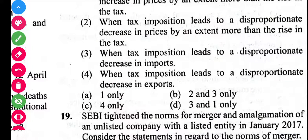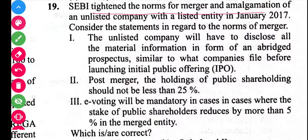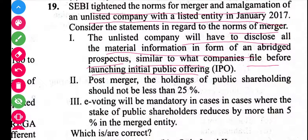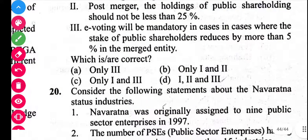Next question is related to SEBI. SEBI tightened norms for merger and amalgamation of unlisted companies with listed entities in January 2020. The unlisted company must disclose all material information in the form of an abridged prospectus similar to what a company files before launching an IPO. Post-merger, public shareholding should not be less than 20%. E-voting will be mandatory where the stake of public shareholders is reduced by more than 5% in the merged entity. Statements 1, 2, and 3 are correct, so the answer is D.